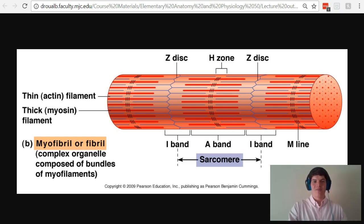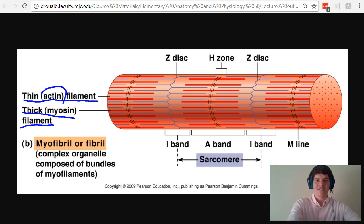Let's first make sure we understand the basic structure of the sarcomere. We have two different types of filaments: thin filaments and thick filaments. Thin filaments are composed of actin. Thick filaments are composed of myosin.